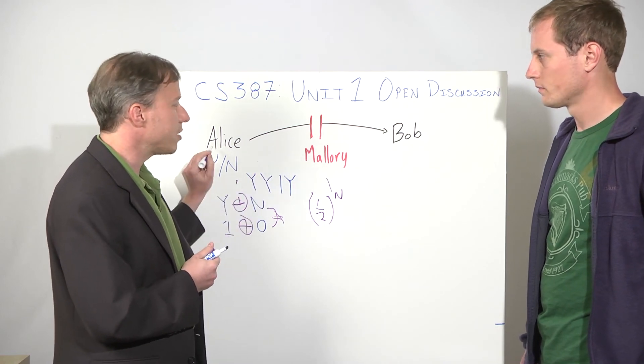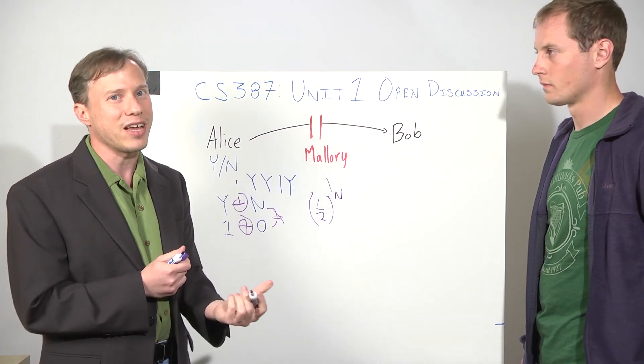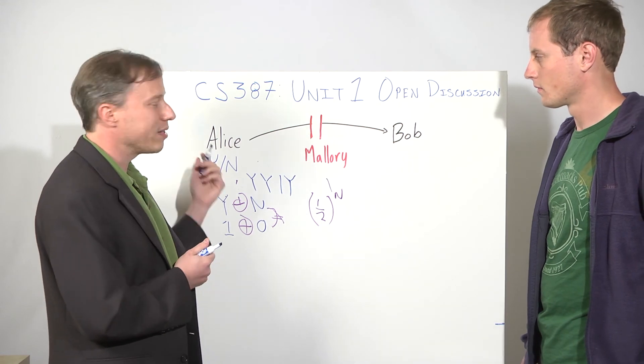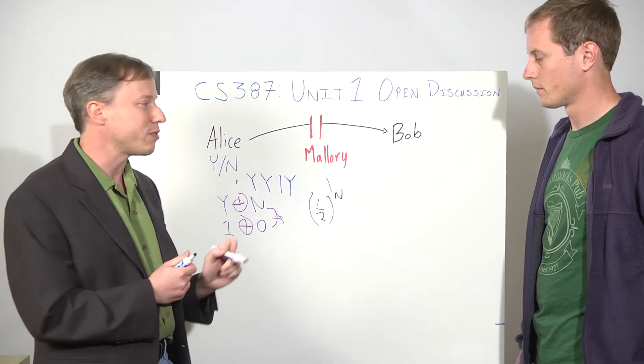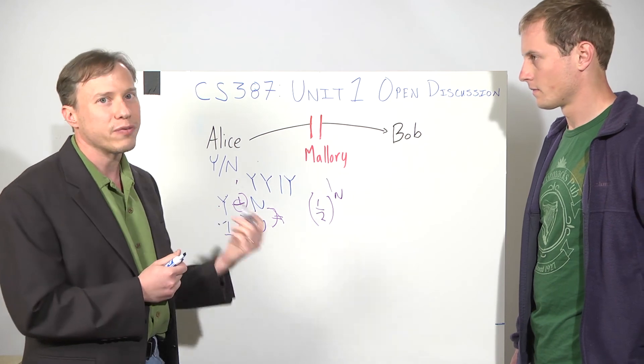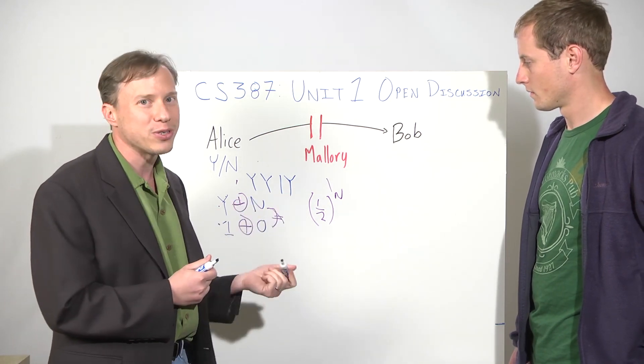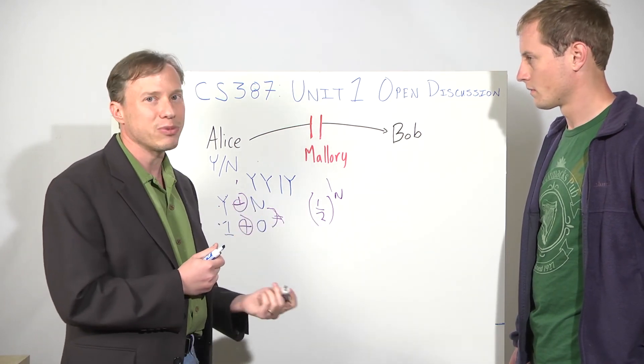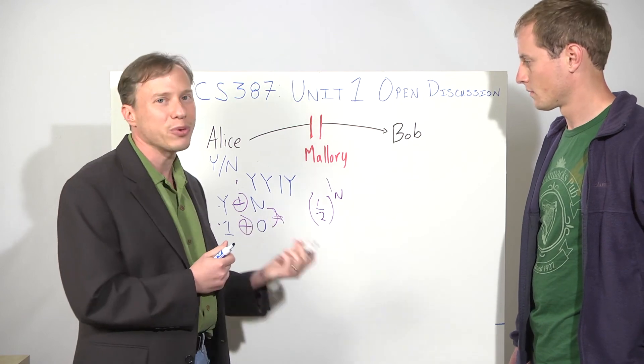So this just involves Alice picking randomly. We didn't need to add something beyond the one time pad. Alice has to be able to flip a coin or some other source of randomness to decide whether to send the y or the 1 for each of these four positions or more positions if she wants the success probability to be lower than 1 half to the fourth.